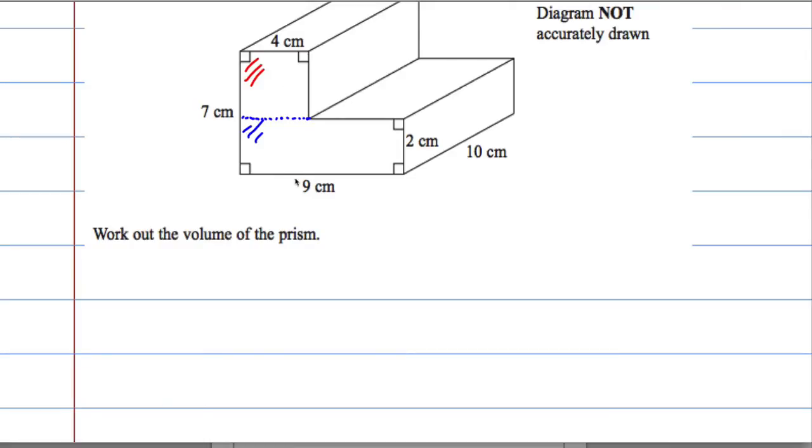So, the area of this blue rectangle is going to be 9 times 2. 9 times 2 is 18, so it's 18 centimeters squared. That's the area of that part.